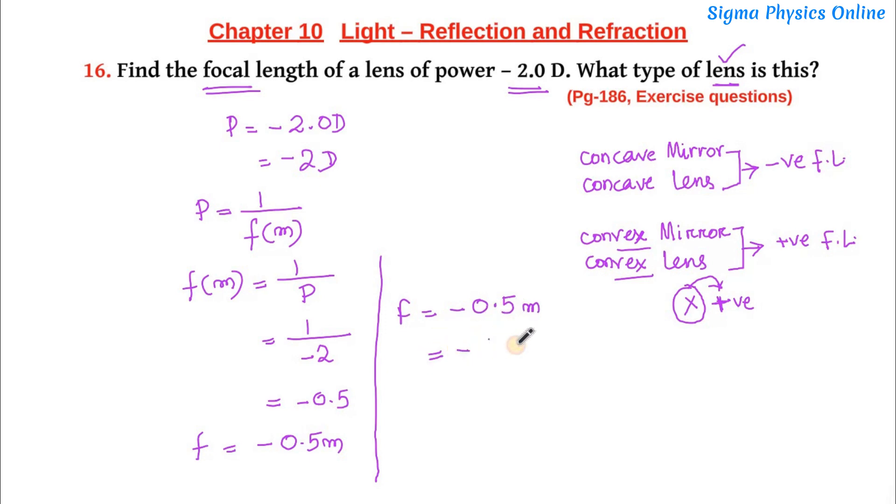So we can rewrite this value as minus of 50 centimeter. If you write either of them they both will be correct. So this is the answer. The focal length of this lens is minus 0.5 meter or minus 50 centimeter.